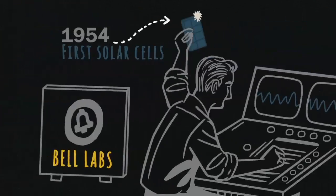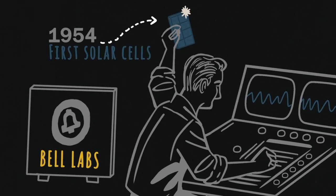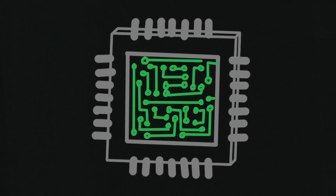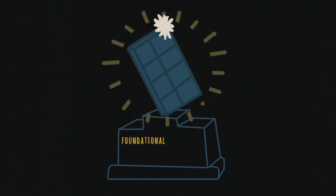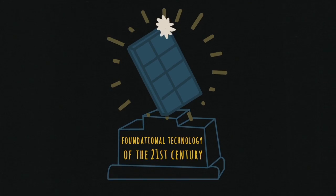The first practical solar cells actually came out of Bell Labs in the 1950s. Like semiconductors, photovoltaics are going to be a foundational technology of the 21st century. Why?